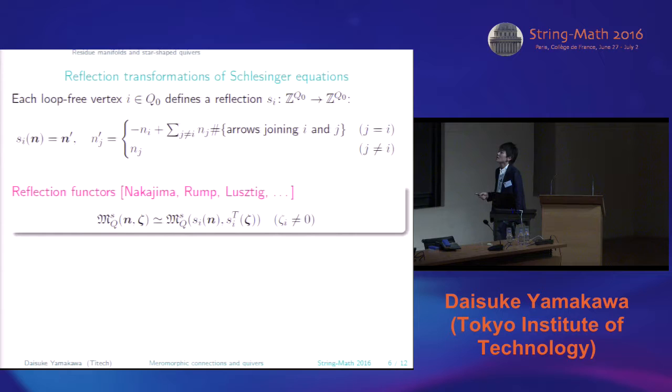And also, his result has another application. So it is well known that each loop-free vertex of the quiver defines a reflection. And if the quiver Q has no edge loop, then such reflections generate the Weyl group of some symmetric Kac-Moody algebra. So now, it is very well known, isomorphism between two quiver varieties with different parameters related by the reflection.